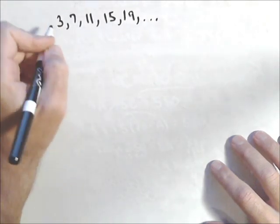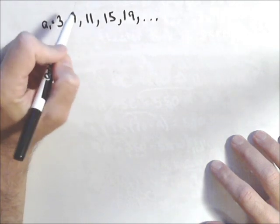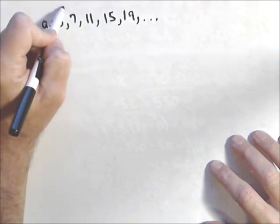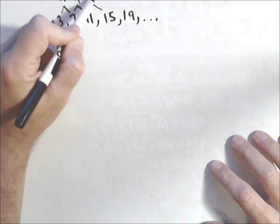So here, our first term, or what we'd call a sub 1, is 3, and we have a common difference of 4, because each time it's going up 4. So that's what makes it arithmetic, is that common difference.